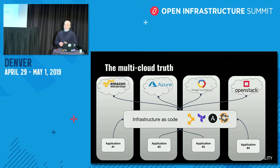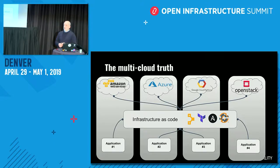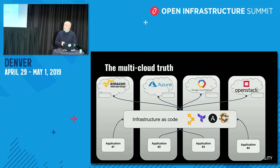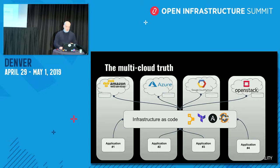This means that applications run in silos — the application for Amazon is written and deployed on Amazon, another application is deployed on Azure. When we talk about multi-cloud, we're basically talking about multiple clouds running at the same time: one corporation having accounts on each of these clouds. The dream of portability is not really true, or not really that simple, especially when you start keeping data into the equation.